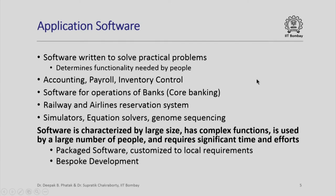While system software is the basis of everything that we do with computers, the main aim is to write programs which will solve practical problems. Because these programs determine functionality needed by people, all such programs are collectively classified as application software. Some examples are accounting, payroll, and inventory control — these are the traditional applications for which computers were deployed from very early days.